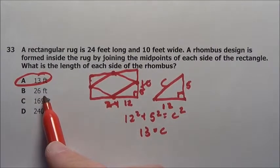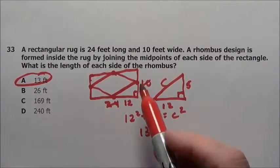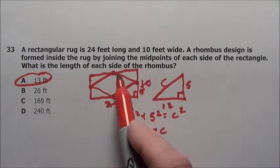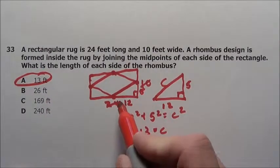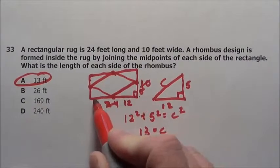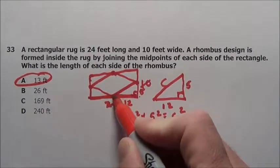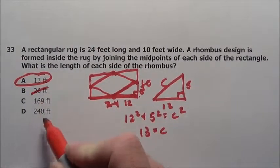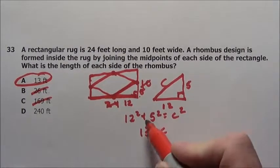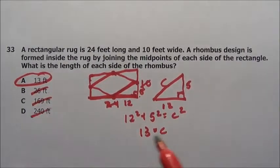These other options don't even make sense. If you look at it, I could have done the problem without even thinking about it. Because it said, what is the length of each side of the rhombus? Well if this is 24, is there any way that little side right there could be 26? No. 169? Not a chance. They were hoping you forgot to take the square root. 240, that's the area of that rectangle, 24 by 10.